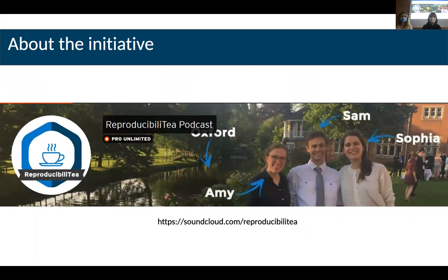The reproducibility initiative itself started in Oxford with three PhD students — back then they were PhD students, now they're postdocs. They just wanted to discuss how to improve their practices in research. So they started by just meeting and discussing some papers, which became a podcast and now became this huge umbrella, which is reproducibility.